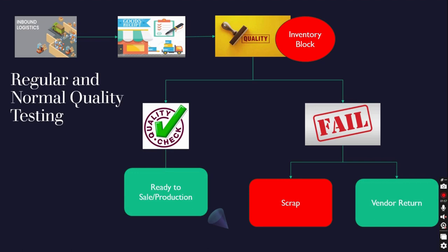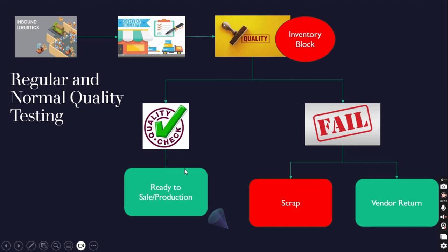In a hypothetical layman's example: suppose we have inbound logistics, or say we have got some product or raw material that an organization has received and done the goods receipt. However, before using it, selling it, or adding it to inventory, they have a set of requirements or quality standards they have to meet. That is where quality control comes into the picture.